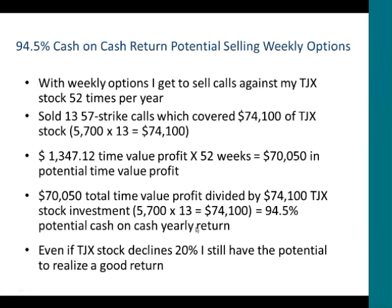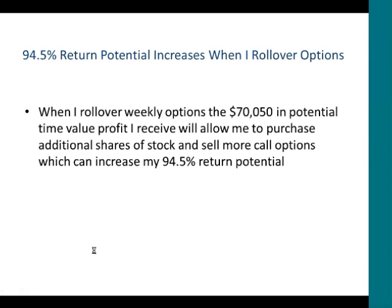If we take this $70,000 in potential time value profit over 52 weeks and divide it by the $74,000 of stock that it covers, we get approximately a 94% cash-on-cash yearly return from selling those call options week in and week out. Even if TJX stock declines 20%, I still have the potential to realize a great return just from selling those weekly calls. I normally roll over these weekly options and reinvest the premium to purchase more stock and sell more call options, which can increase this 94% return potential.